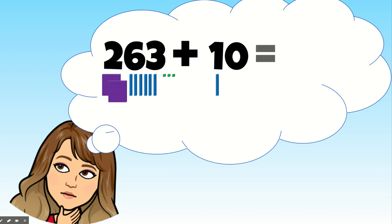263 plus 10 equals 200, 10, 20, 30, 40, 50, 60, 70, 71, 72, 73, 273.